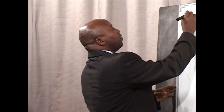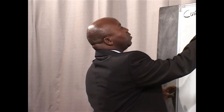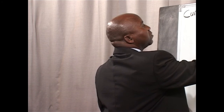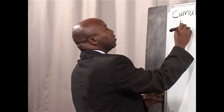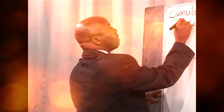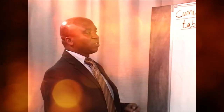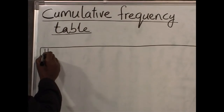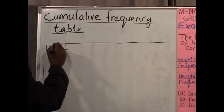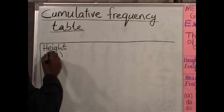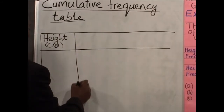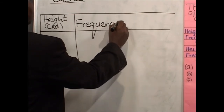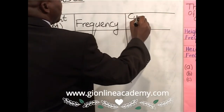When you have that type of question, the first thing to do is to make the cumulative frequency table. The original table only has the frequency. Our cumulative frequency table will have the following columns: the first column will be the heights of the children in centimeters, the second column will be the original frequency, and the final column is where you put the cumulative frequency.